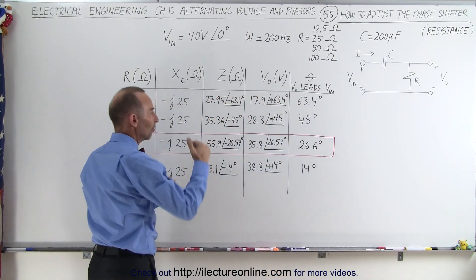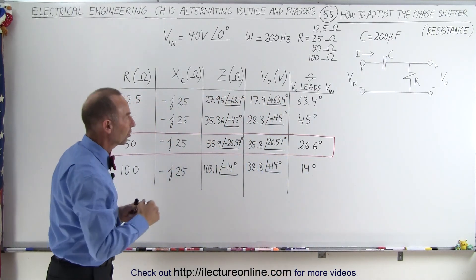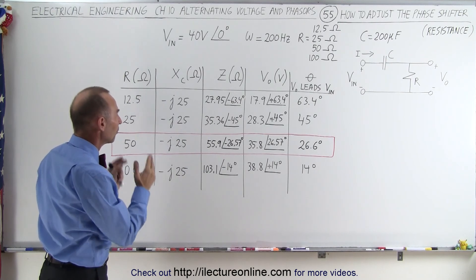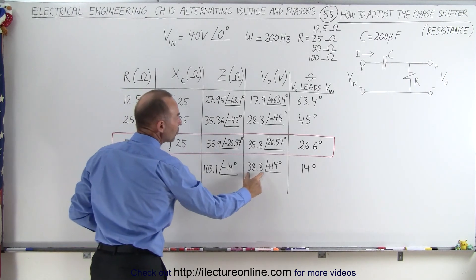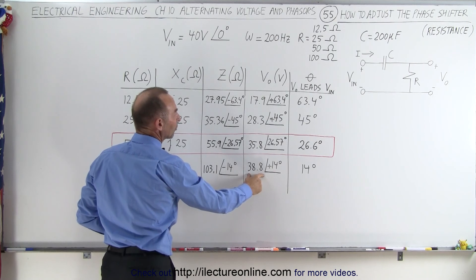And because of that, since the voltage drop across the resistor is therefore much larger than the voltage drop across the capacitor, you almost get the entire voltage drop across the capacitor.